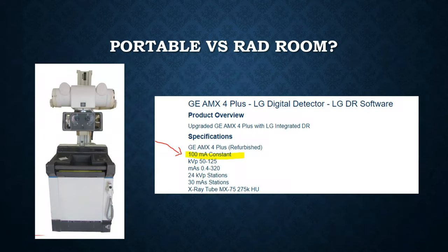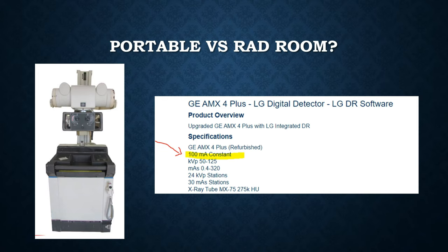Most portable units are set at a fixed 100 mA station. If you need 40 mAs, that becomes a four-second exposure time. That's why you hear that long exposure — it's set at 100 mA fixed, with exposure time calculated accordingly. It's difficult to get a good image on a large patient with a portable. The best option for a KUB is to bring the patient to the room or use a higher mA station to achieve a lower exposure time.